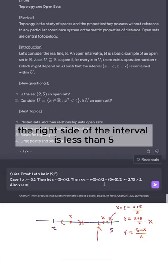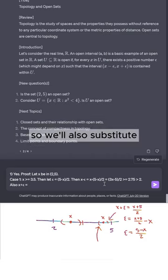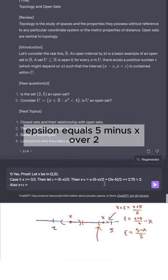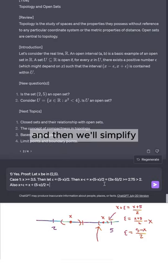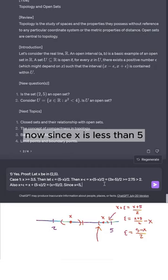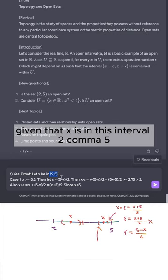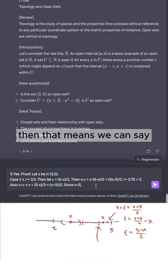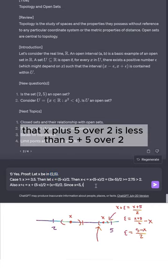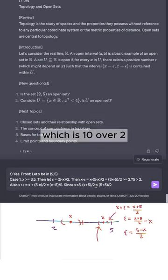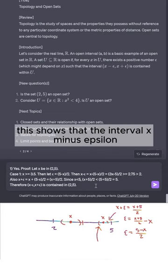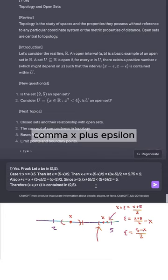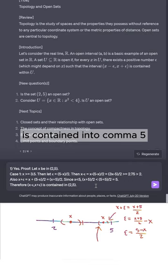Next, we need to show that the right side of the interval is less than 5. We'll also substitute epsilon = (5 - x)/2 and simplify, which is (x + 5)/2. Now since x < 5, given that x is in this interval (2,5), then we can say that (x + 5)/2 < (5 + 5)/2, which is 10/2, which equals 5. So this shows that the interval (x - epsilon, x + epsilon) is contained in (2,5).